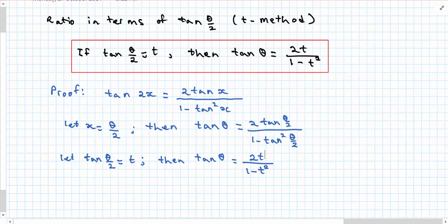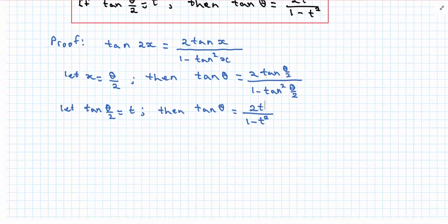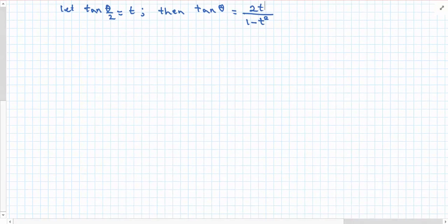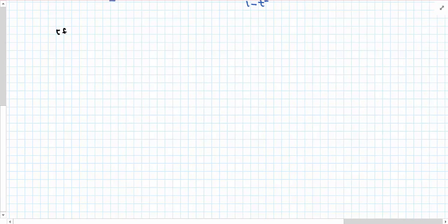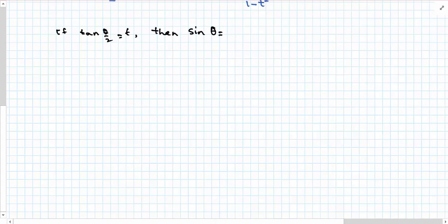Now let's have a look at sin θ. We start in a similar way: if tan(θ/2) is equal to t, then sin θ is equal to 2t over 1 plus t squared. This relationship requires a bit more work to derive.